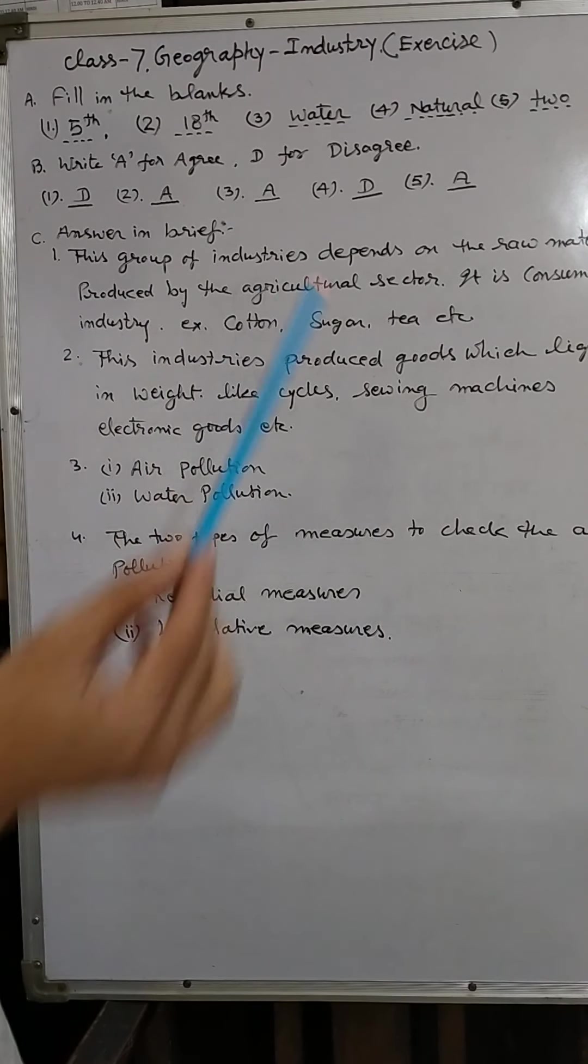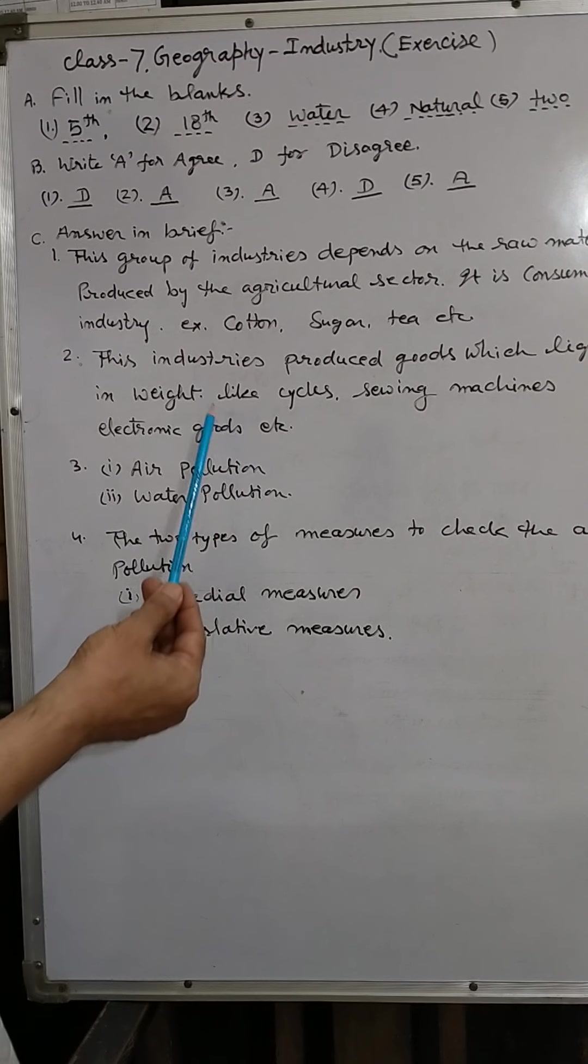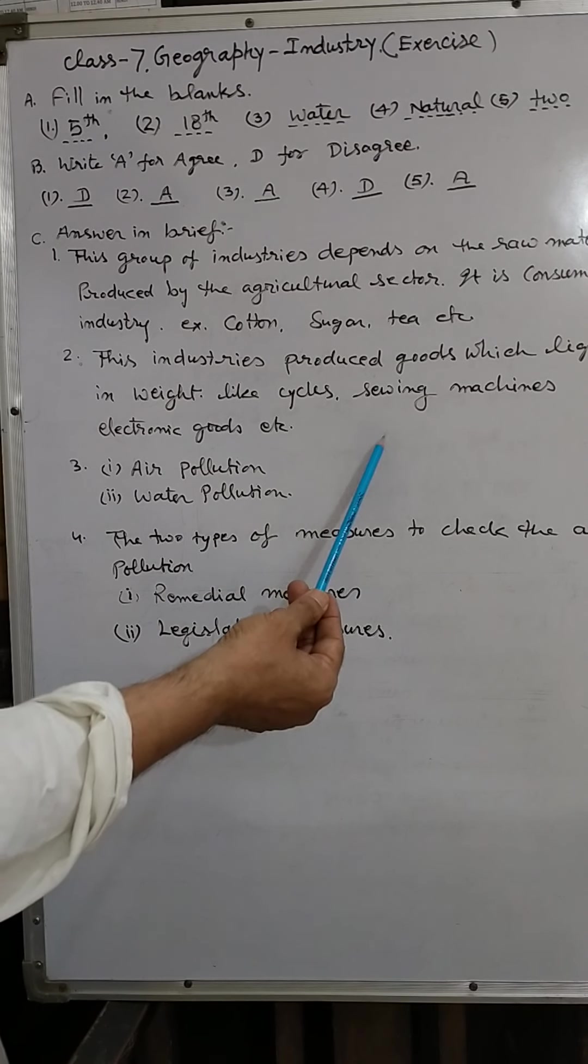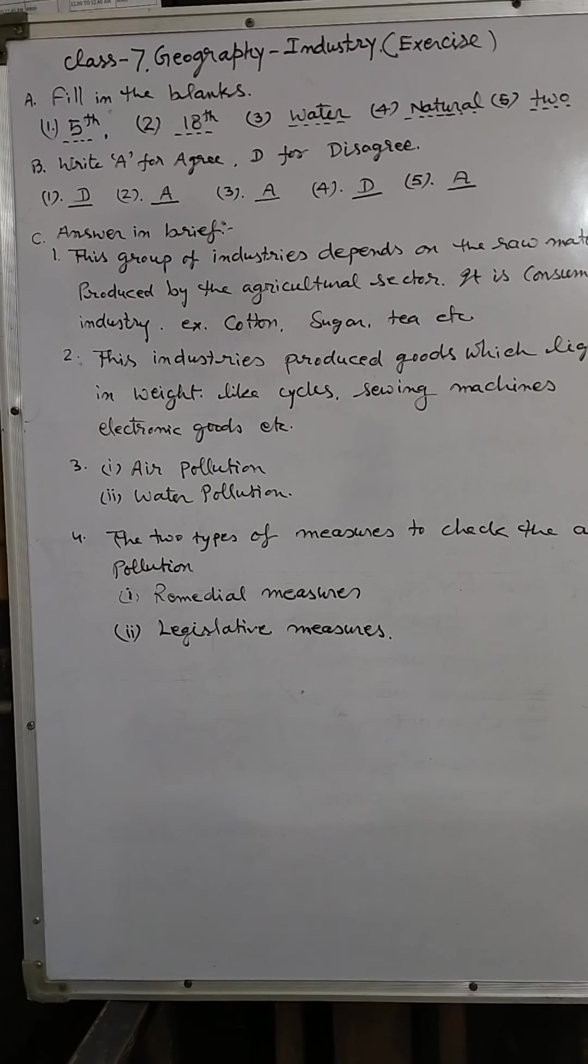Industries which produce light things like bicycle, machine, they are called light industry. There are two types of pollution: air pollution and water pollution produced by industries.